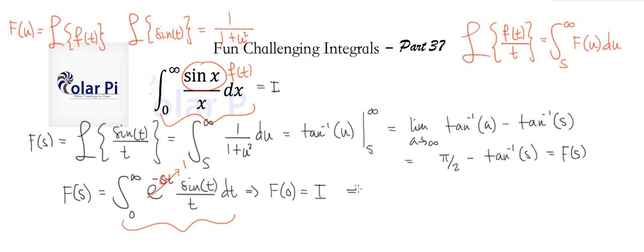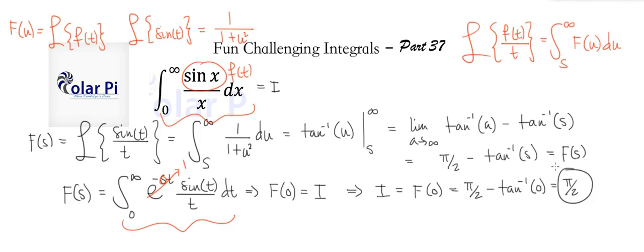So I is capital F(0). We know that F(s) = π/2 minus arctan(s), so we just plug in zero. Capital F(0) equals π/2 minus arctan(0), which is π/2. I hope you enjoyed this and keep watching. Take care.